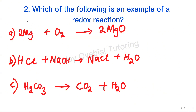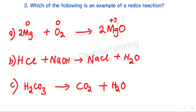So magnesium is going to have 0, and oxygen also 0. Now moving on to the products, magnesium is in group 2, so it has a positive 2 charge. Oxygen is negative 2 in all compounds except for peroxides. The next thing we do is compare the oxidation numbers on the left and also on the right — there must be both an increase and a decrease in order for it to be a redox reaction.